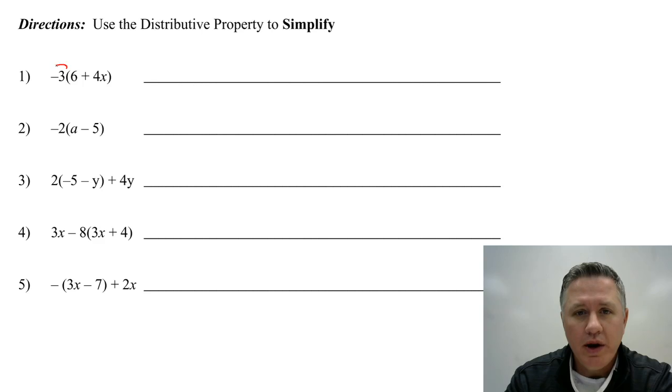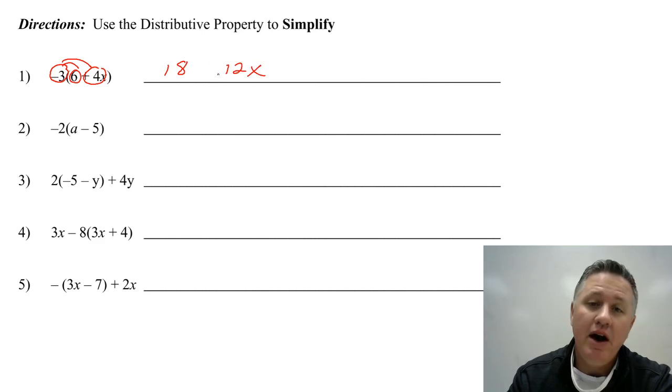Okay, number one. We are going to distribute negative three to both terms. And remember, don't look at the sign yet. Three times six is 18. Three times 4X is 12X. Now do the sign. The opposite of a positive is a negative, and the opposite of a positive is a negative. So there's your answer.